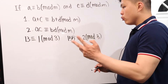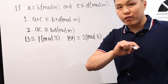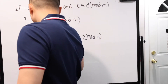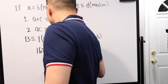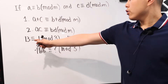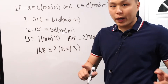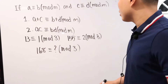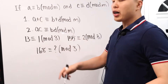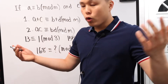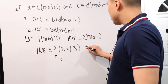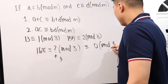Let's start with this: 13 is equivalent to 1 mod 3, and 155 is equivalent to 2 mod 3. If we're looking at 168 — which is 13 plus 155 — we add the remainders: 1 plus 2 is 3. But here's the tricky part: 3 mod 3 makes no sense, because 3 divided by 3 has no remainder. So 168 is actually equivalent to 0 mod 3.